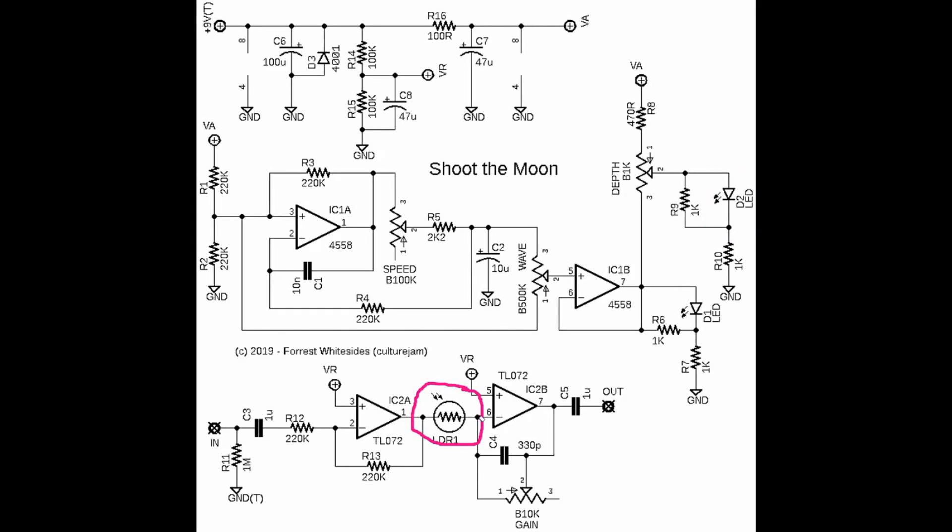So hopefully that makes sense. The big concept here is that it's called an optical tremolo because we have the optical elements of an LED and an LDR that are responsible for changing the gain of this op amp stage. And that gives us the amplitude modulation or the amplitude of our signal going down and then back up over and over again, that gives us the tremolo sound.